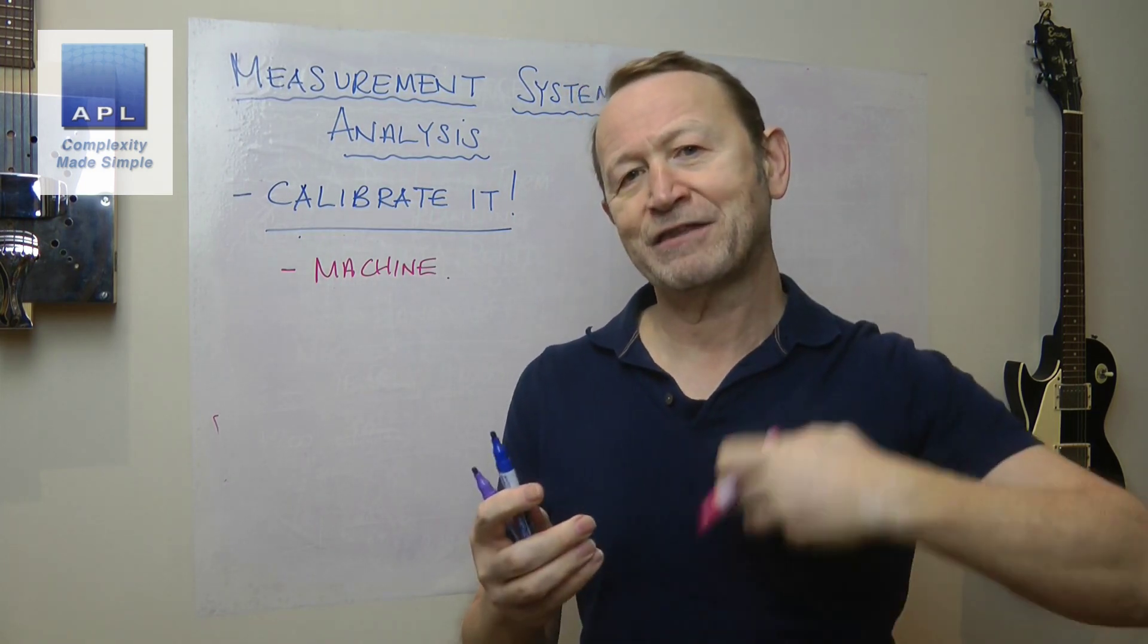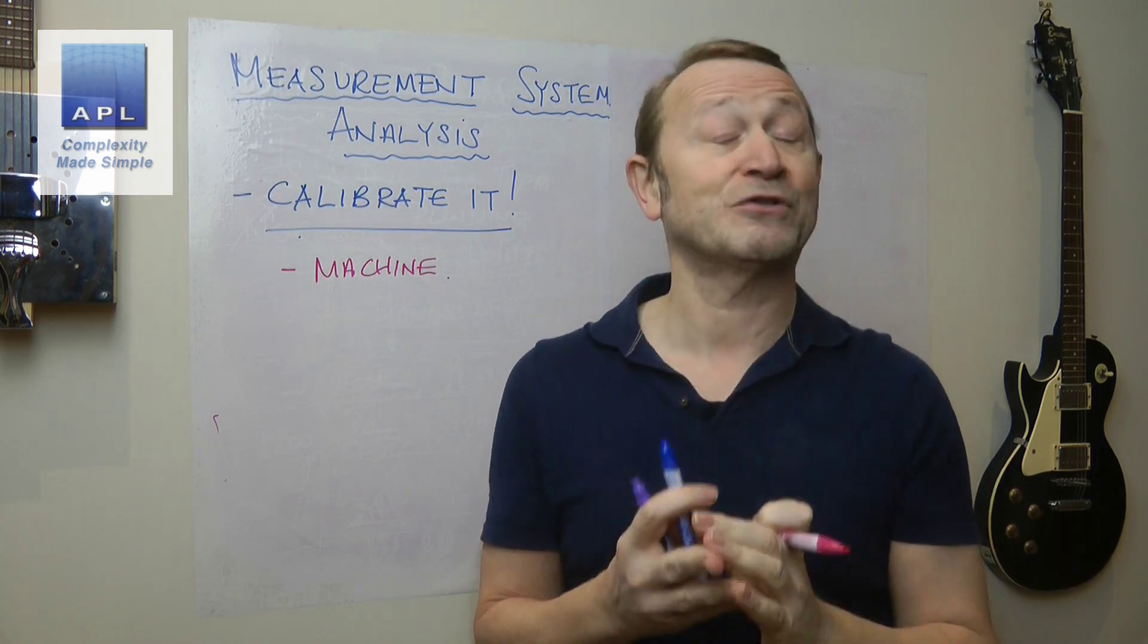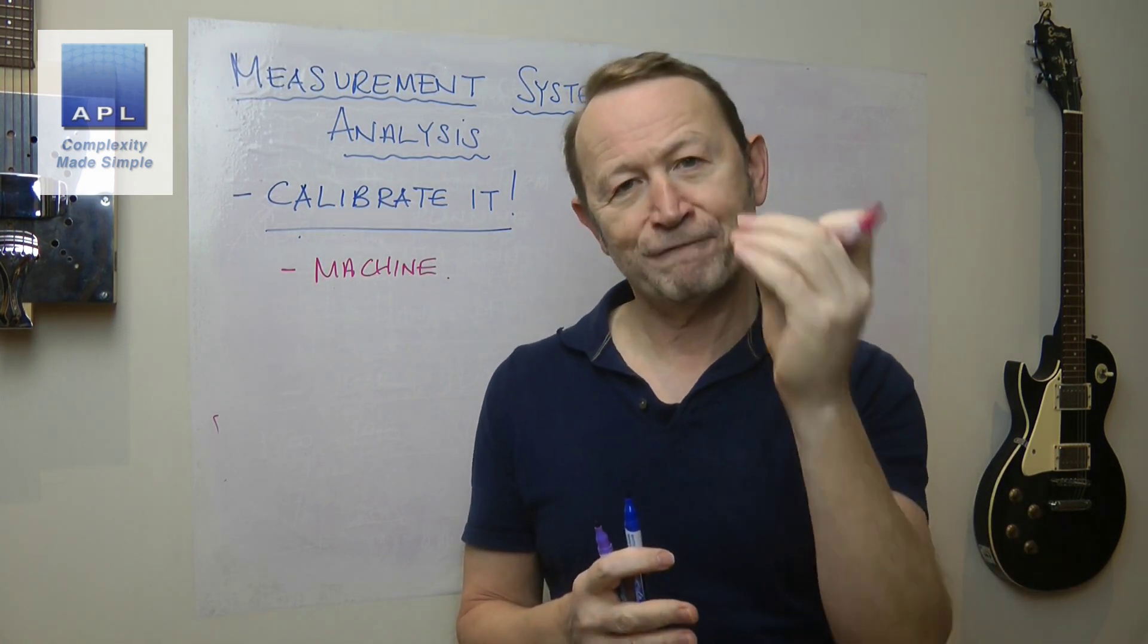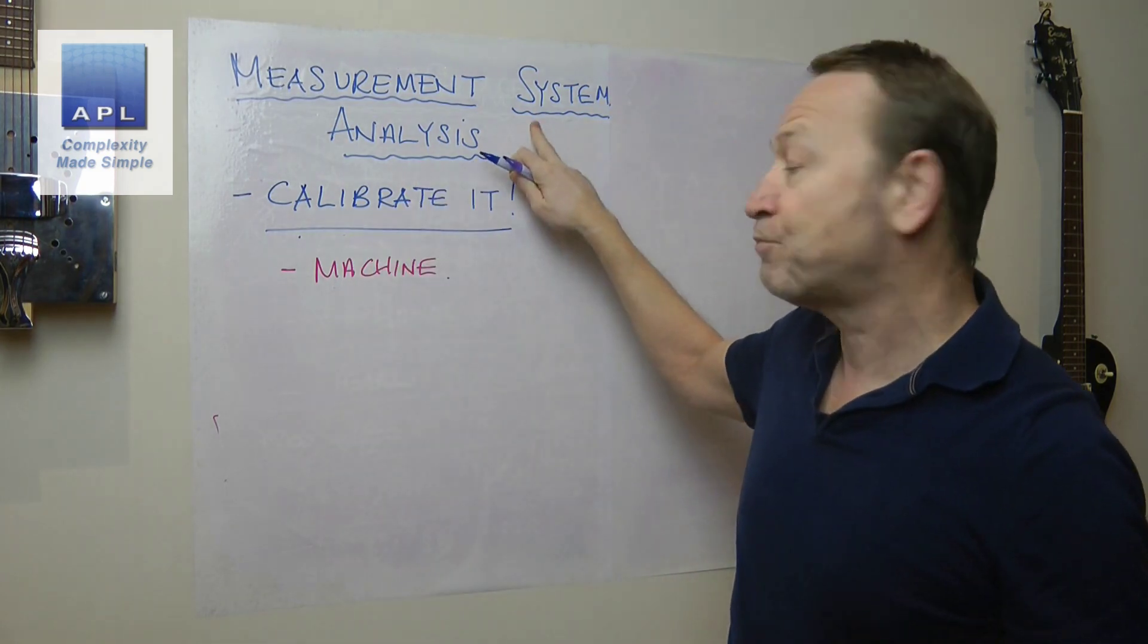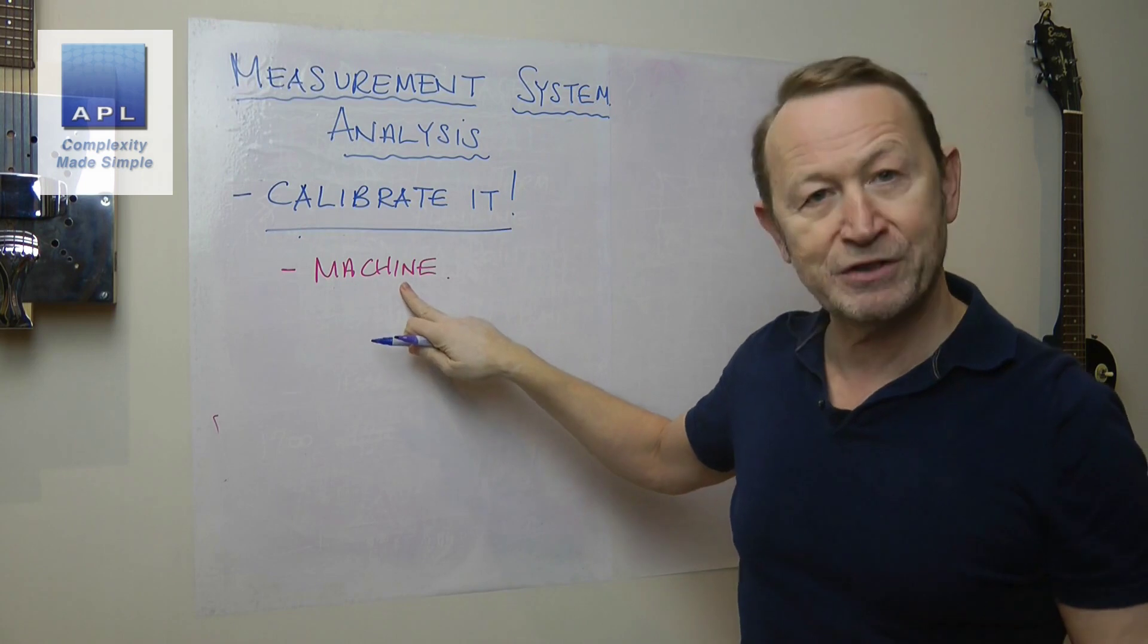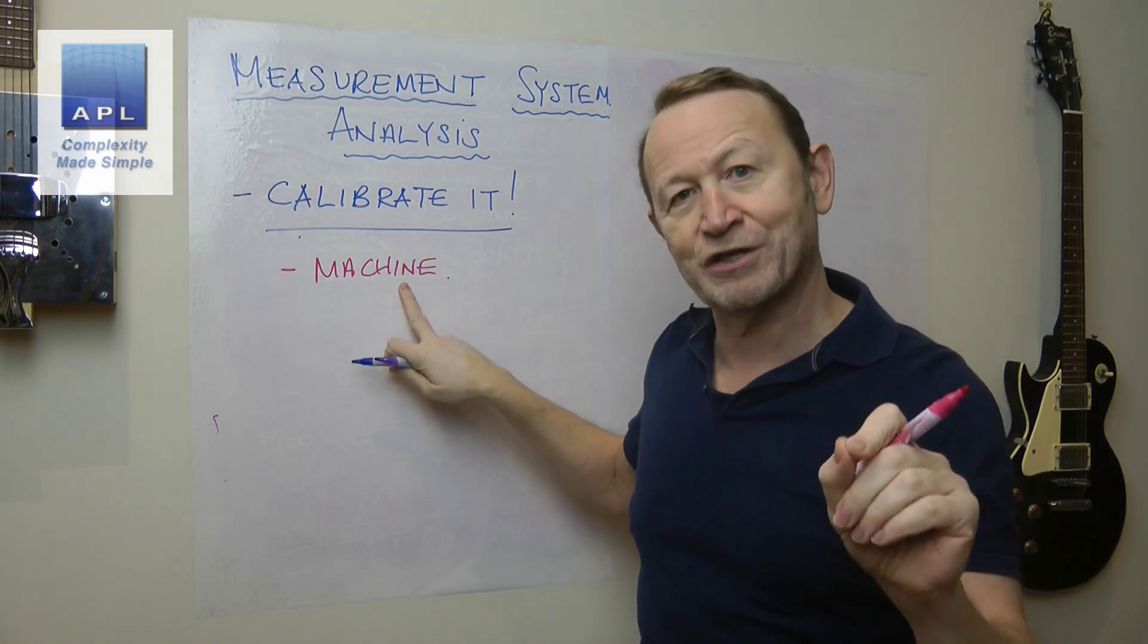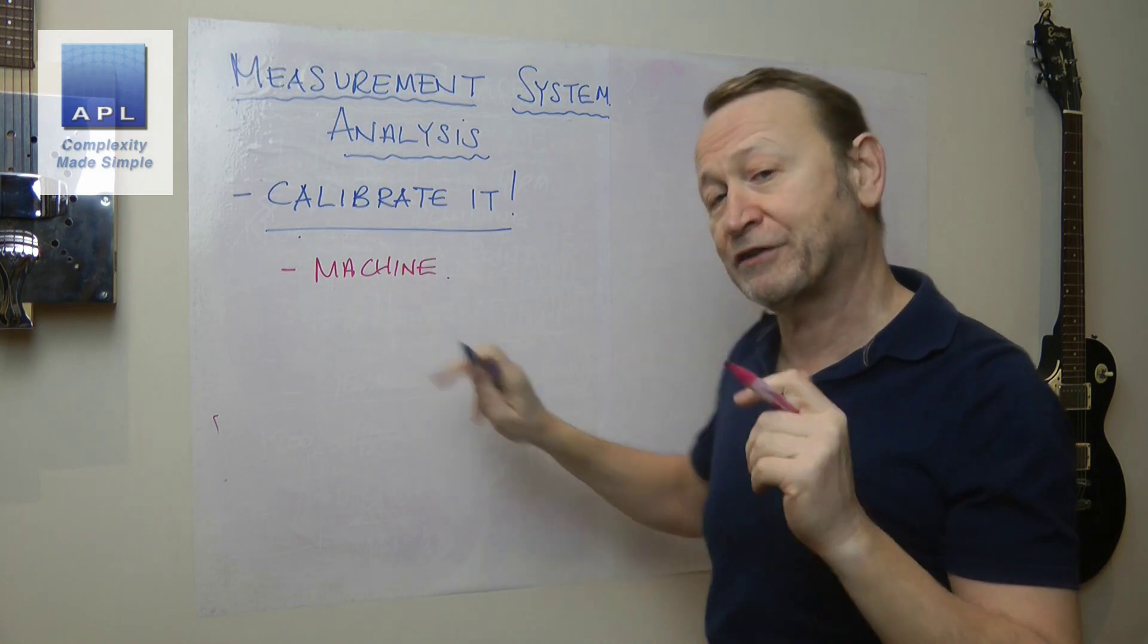It doesn't tell you the error in the method and the component tree and all the elements that make up a system. So the first thing we want to do is properly define what a measurement system is. A measurement system is not the guessing stick that you're using. This is part of it.